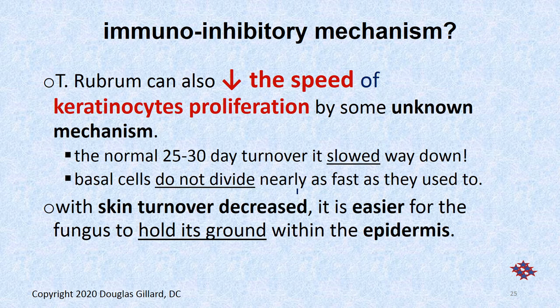Normally every 25 days your skin turns over — we've talked about that conveyor belt — but it slows that down. Your skin speeding up can't flush the fungus out. Because if it's going slow, your skin is like a river: cells are growing up and sloughing off, and every 25 days a cell is born and 25 days later it's dust floating around your house. So an outward flow would try to sweep the bugs out, but if you slow that down, the bugs can stay there for a long time. Skin turnover rate is decreased by this bug.